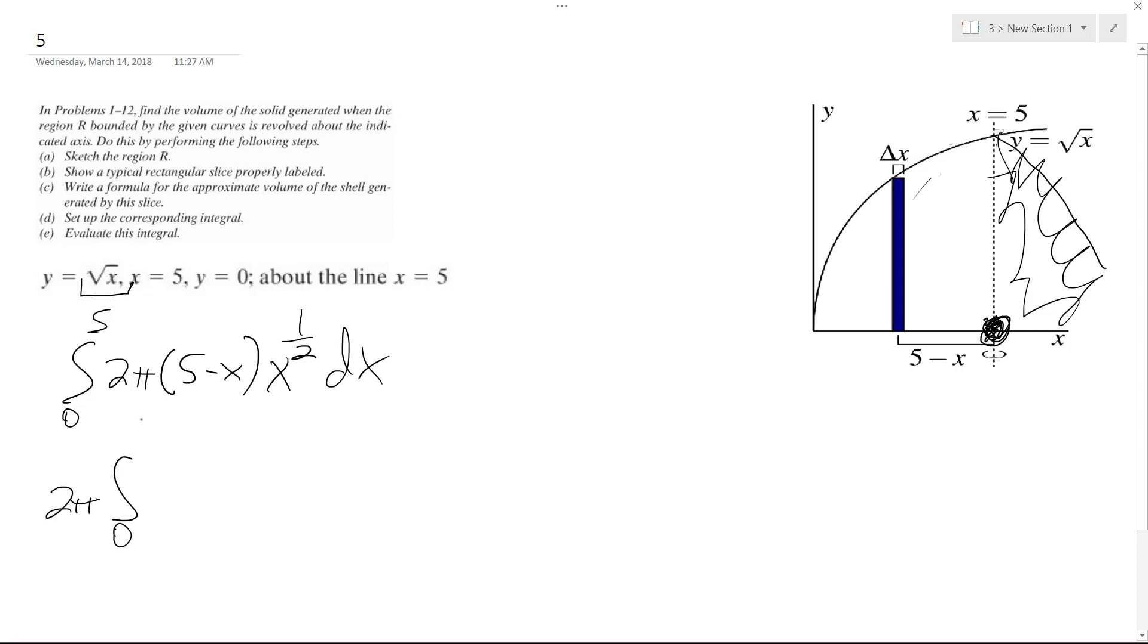And we're going to integrate from zero to five of five x raised to the one half minus x raised to the three halves, and all this dx.